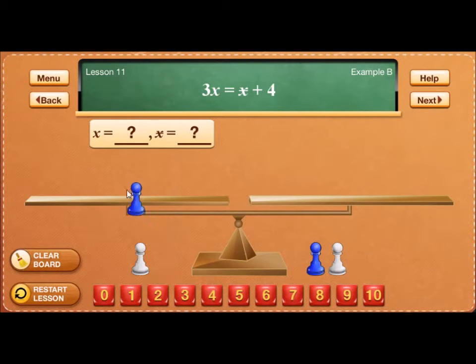So on the left side of the scale, I'm going to need 3 blue pawns. And on the right side, I'm going to need a star and a 4 cube.